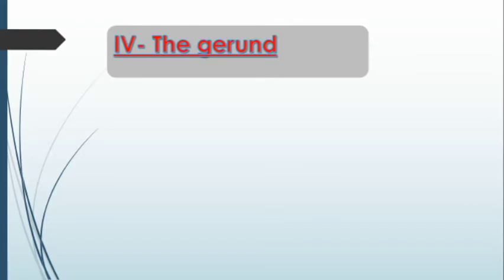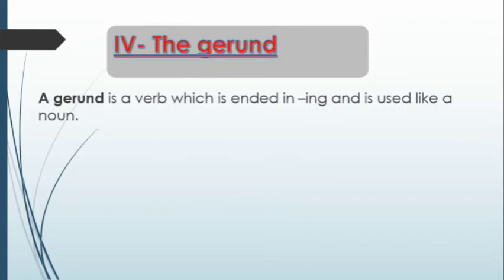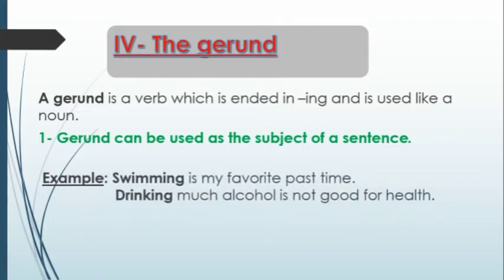Now let's see the ING form used with the gerund. First, let's give a short definition: a gerund is a verb which ends in ING and is used like a noun. A gerund can be used as the subject of a sentence. For example: 'Swimming is my favorite pastime,' 'Drinking much alcohol is not good for health.' We can see that the gerund is used in both examples as the subject of the sentences.